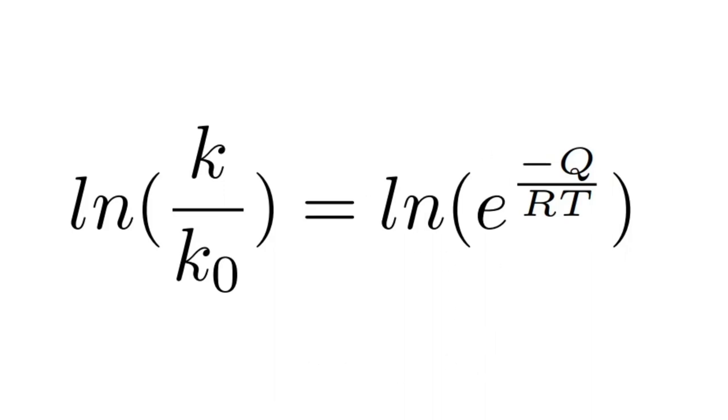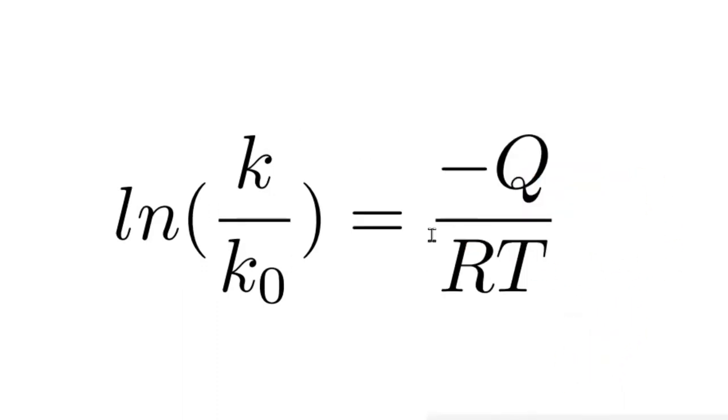Now on the right side, this is very convenient, because natural log of E to a power cancels everything out except for that power, that exponent. And this is what we end up with.